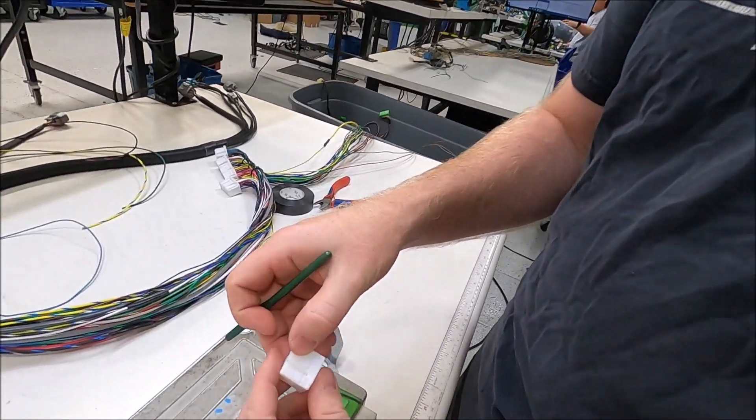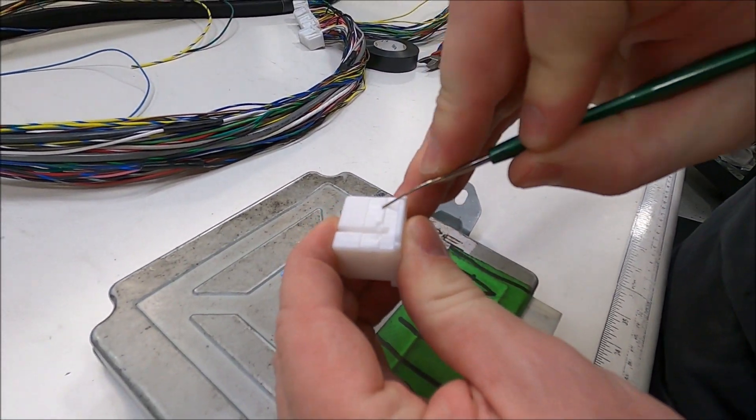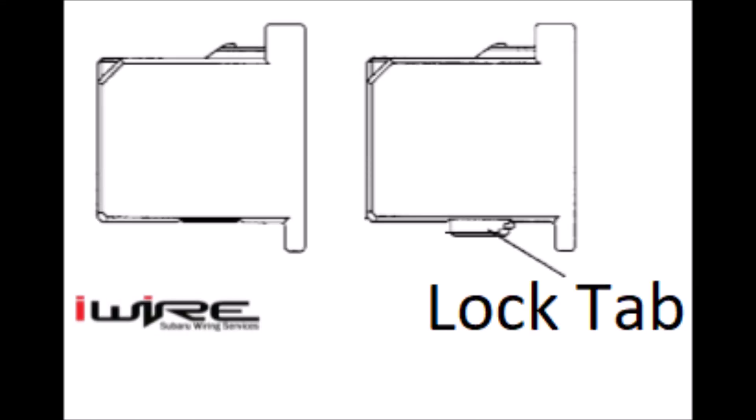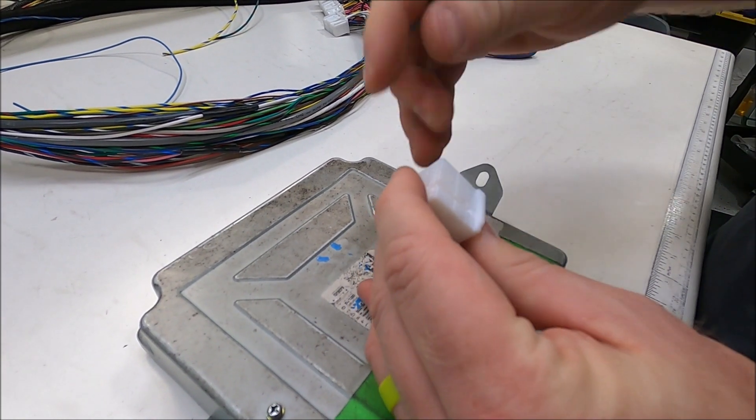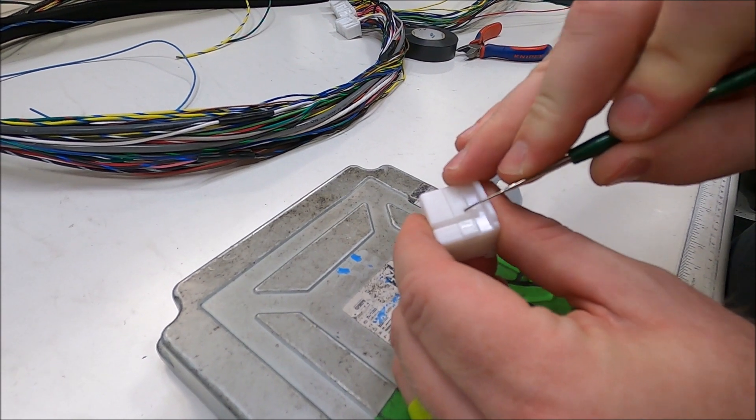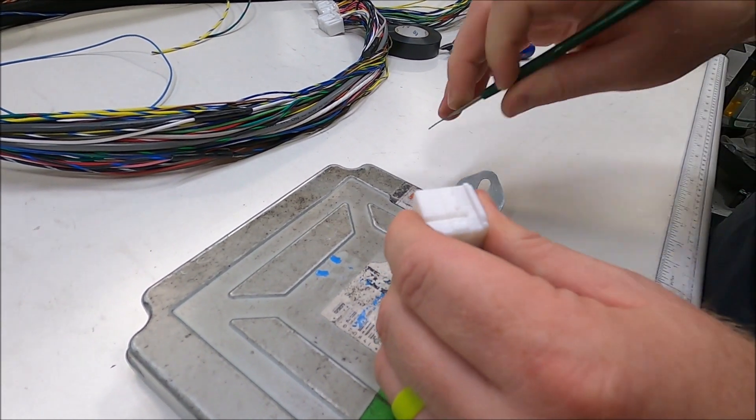So the first step for any de-pinning of an ECU is there's a small lock tab on the bottom. You can see there's little edges to grab it.